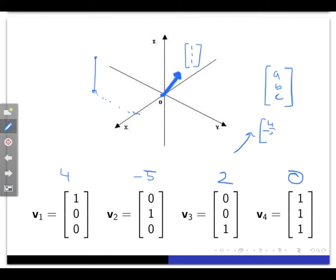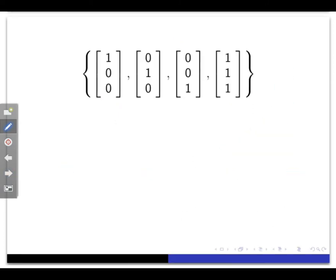In fact, it's easy to see that I can reach every point ABC whatsoever in R3 this way, because I would just travel A units along V1, B units along V2, C units along V3, and zero units along V4. In linear algebra language, we'd say that the set of vectors V1, V2, V3, V4 spans all of R3, because I can linearly combine these vectors to construct any vector in R3 that I wish.